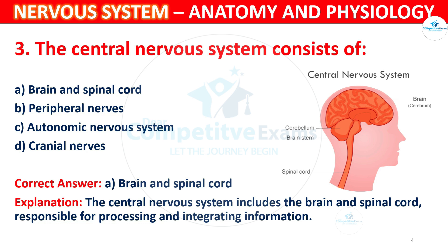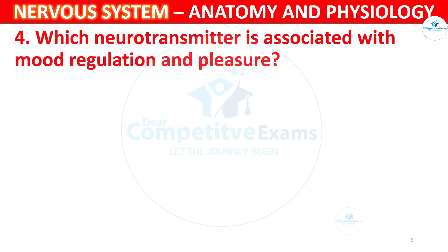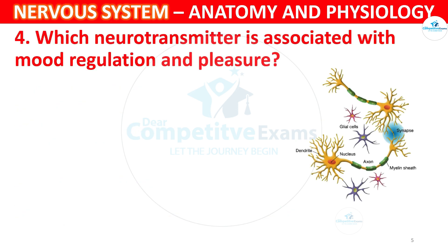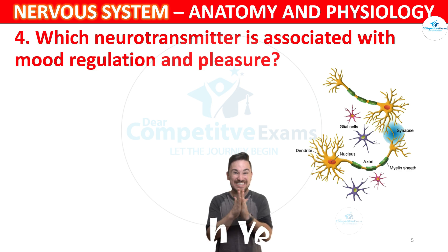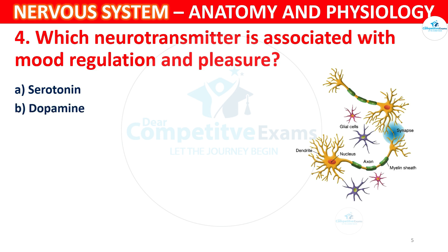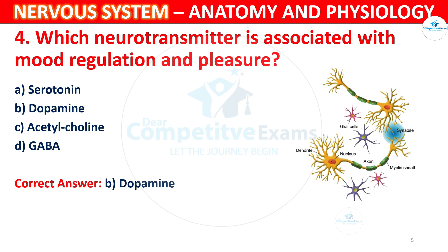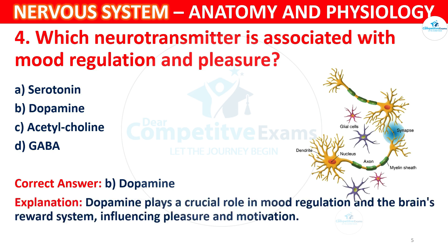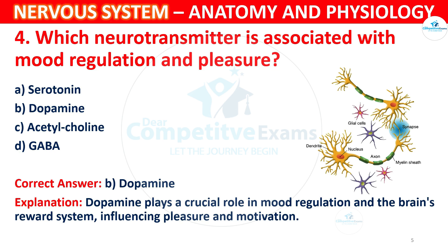Question 5: Which neurotransmitter is associated with mood regulation and pleasure? Options: A) Serotonin, B) Dopamine, C) Acetylcholine, D) GABA. The correct answer is B, Dopamine. Dopamine plays a crucial role in mood regulation and the brain's reward system, influencing pleasure and motivation.